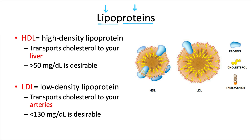HDLs, or high-density lipoproteins, have relatively less lipid content and more protein content, which is preferable. They function to transport cholesterol from the peripheral tissues to the liver, where it's processed and eventually expelled from the body. HDL helps your body get rid of excess cholesterol it doesn't need. As a general guideline, above 50 milligrams per deciliter of blood is an ideal HDL count for most people.